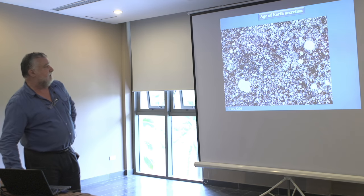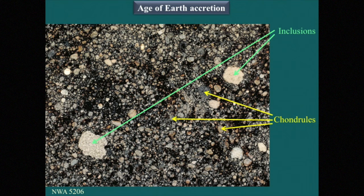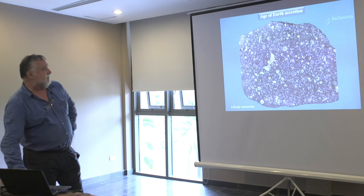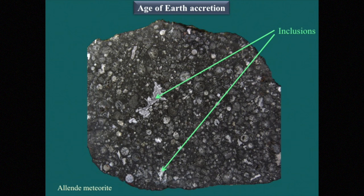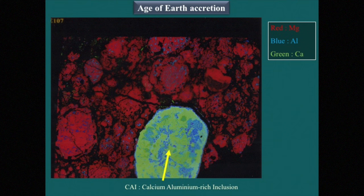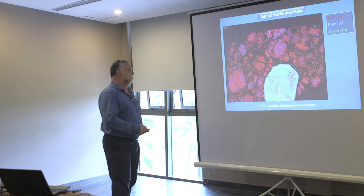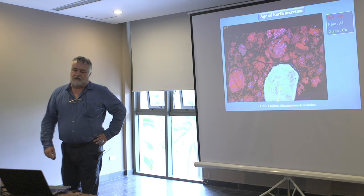That means their composition is that of the primary solar system — they are very primitive objects. Coming back to this meteorite, we have seen the chondrules, but there are also some white inclusions that have a different shape from the chondrules. If we look at the composition, in red we have magnesium — the minerals like olivine and pyroxene in the meteorite — but in this white inclusion we have mainly aluminium and calcium. So this is what is called the calcium-aluminium-rich inclusions, also called CAI.